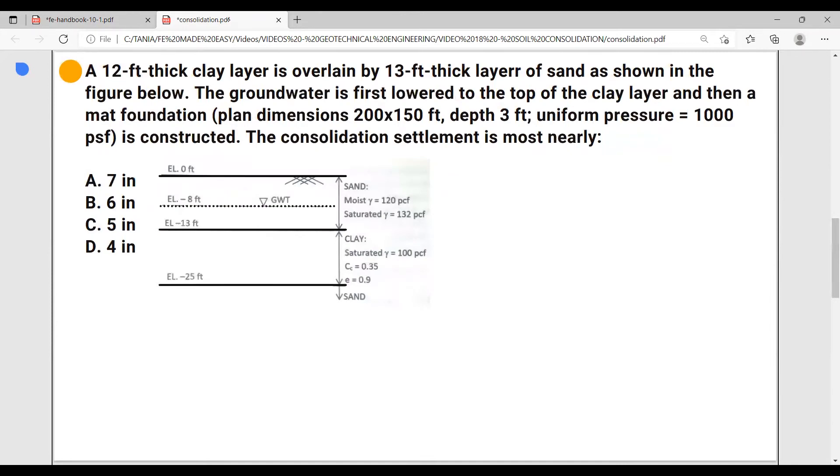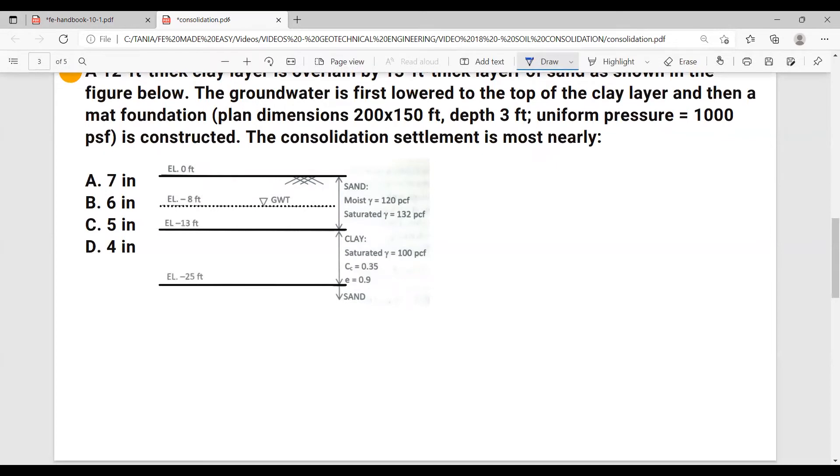A 12-foot thick clay layer is overlaid by 13 feet thick layer of sand, as shown in the figure below. The groundwater is first lowered to the top of the clay layer, and then a mat foundation, plan dimensions 200 by 150 feet, depth 3 feet, uniform pressure 1000 pounds per square feet is constructed. The consolidation settlement is most nearly.